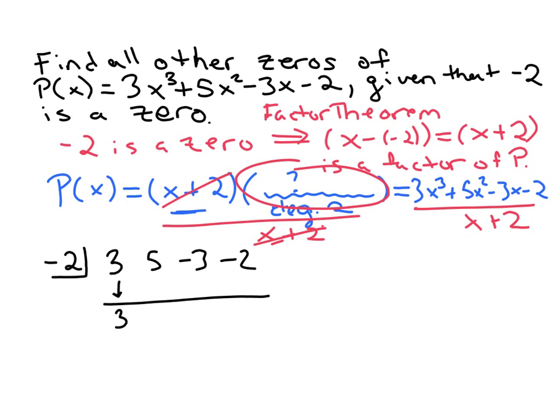Let's see, so we multiply negative two times three, and so we get negative six here. Add these numbers. So five plus negative six gives us negative one.